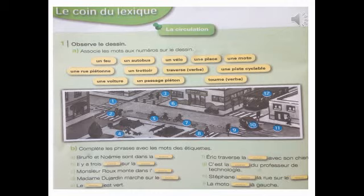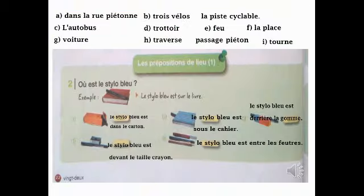On va voir les réponses à la page suivante. La phrase A : « Dans la rue piétonne. » La phrase B : « Trois vélos » et « la piste cyclable. » Phrase C : « Le bus. » Phrase D : « Trottoir. » Phrase E : « Feu. »